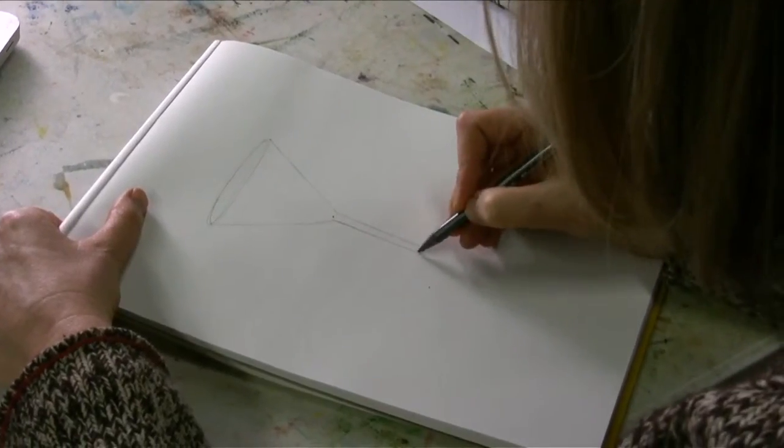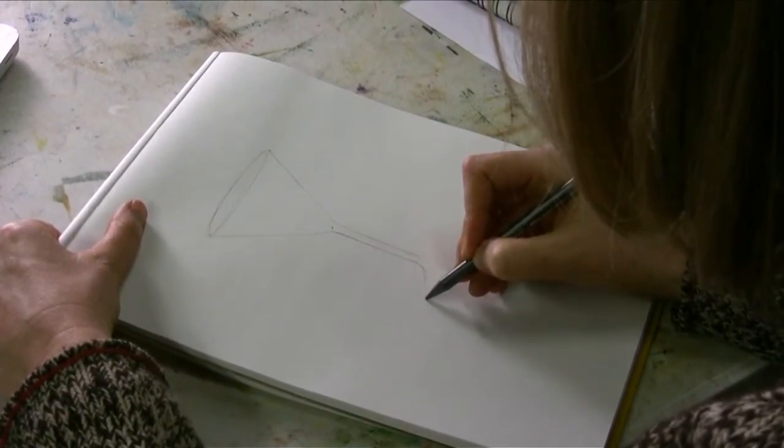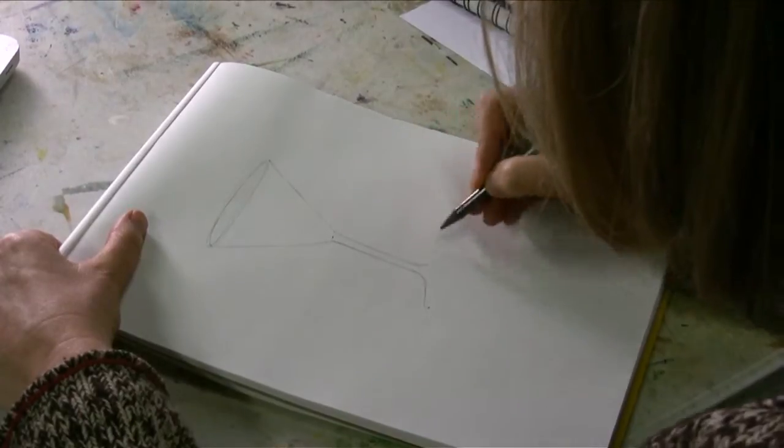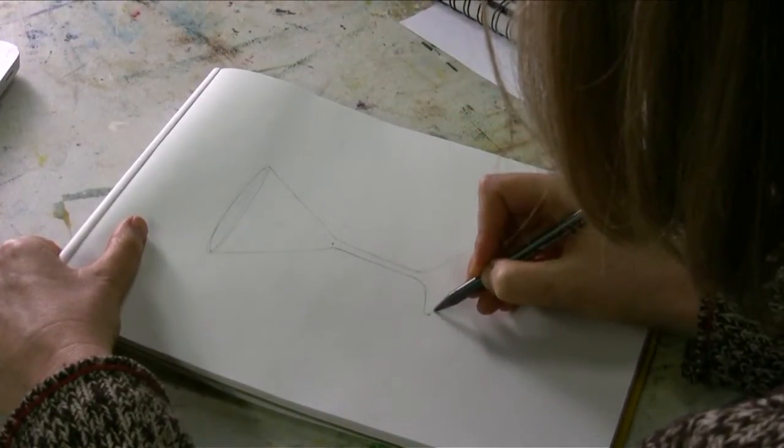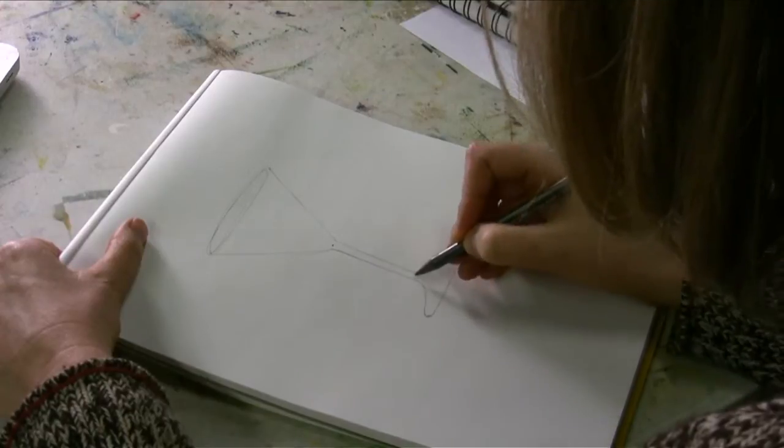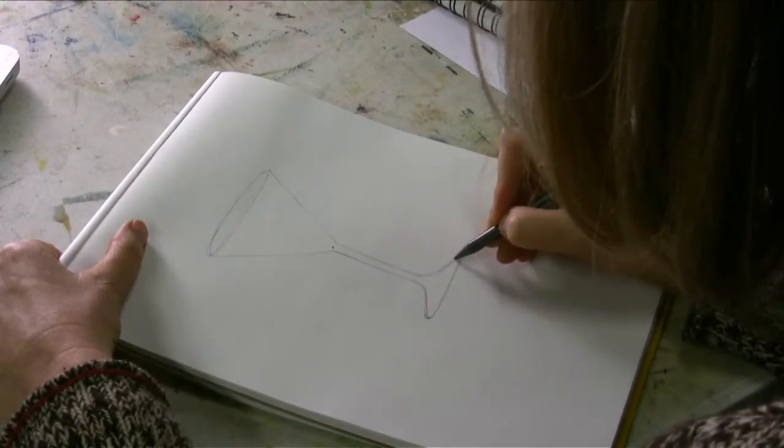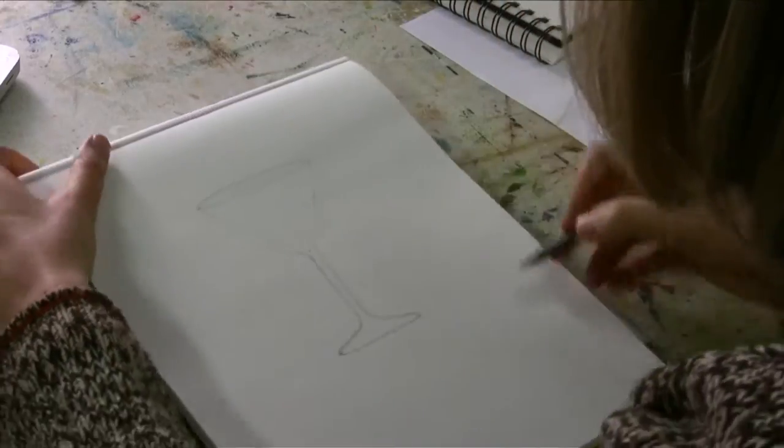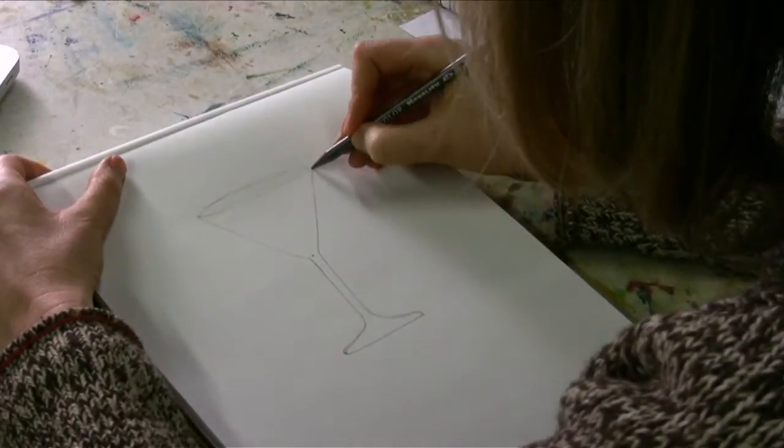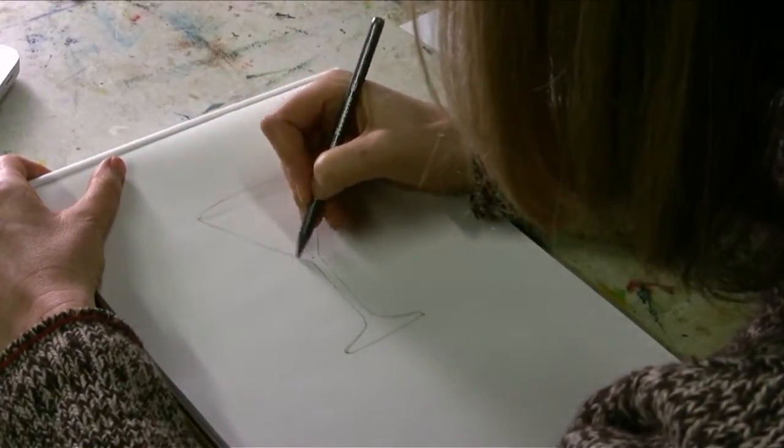And it's going to flare out to the base, which I've already drawn a couple of points so that they are even, even from the side. I'm going to make this a little flatter here. So there's the basic outline of a martini glass.